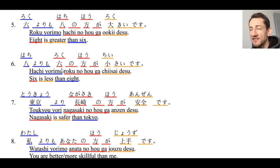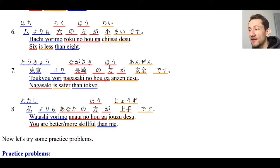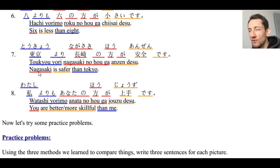Number six: hachi yori mo roku no hou ga chiisai desu — six is smaller than eight. Number seven: Tokyo yori Nagasaki no hou ga anzen desu — Nagasaki is safer than Tokyo. Remember, you could switch the objects around: Nagasaki no hou ga Tokyo yori mo anzen desu. Number eight: watashi yori mo anata no hou ga jouzu desu — you are more skillful than me.